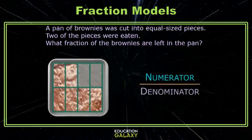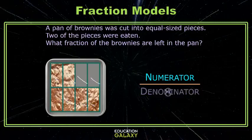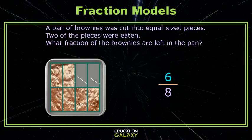So, we need our numerator and our denominator. The denominator is the number of equal-sized pieces. So we have one, two, three, four, five, six, seven, eight equal-sized pieces. The question is, how many are left in the pan? Well, there's one, two, three, four, five, six left in the pan. Six-eighths of the brownies are left.